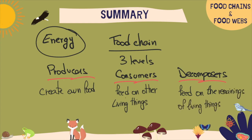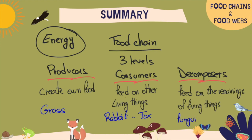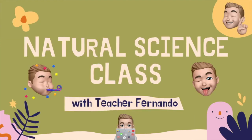Examples of the three levels are: grass as a producer, a rabbit as a primary consumer, a fox as a secondary consumer, and fungi as the decomposers. That was all for this video. I hope you like it and see you in the next one. Bye, y'all!